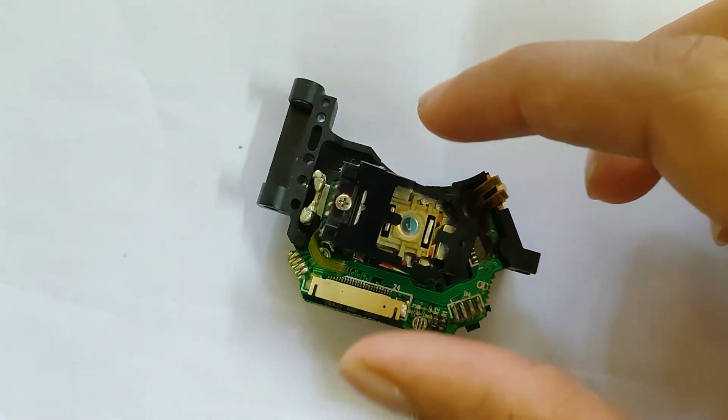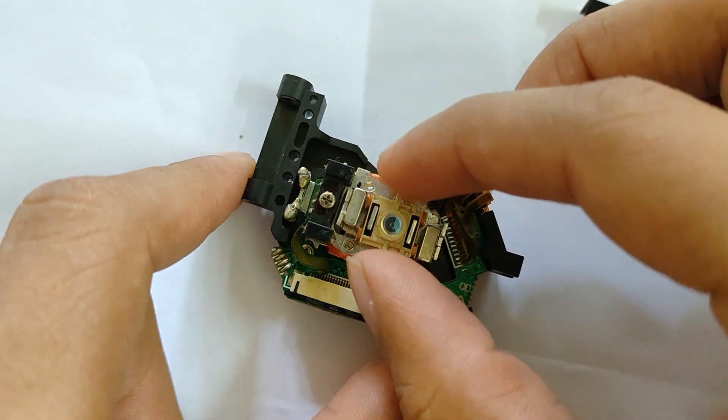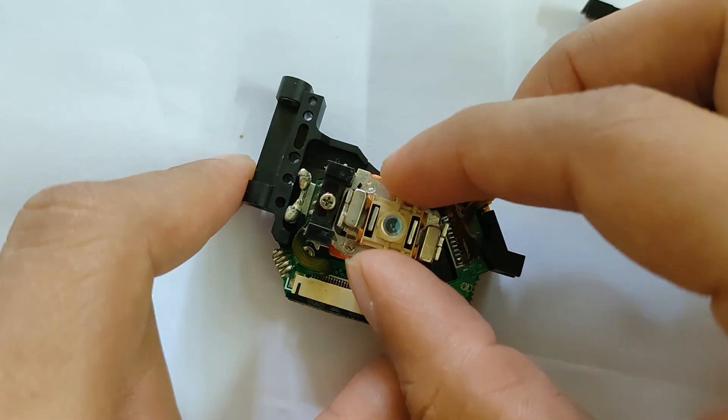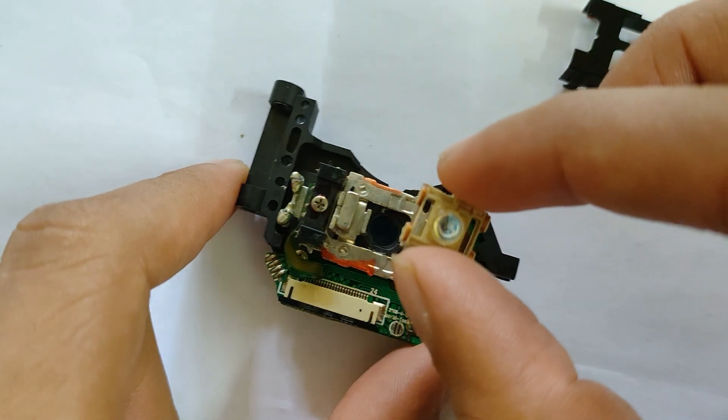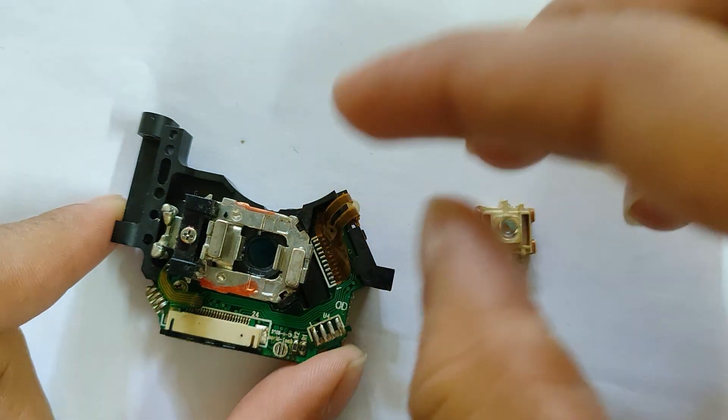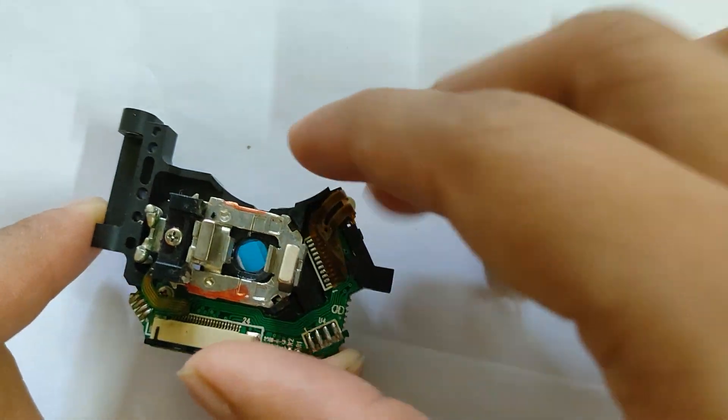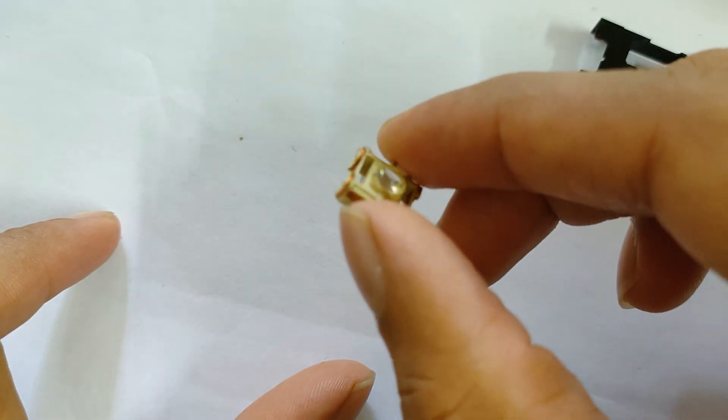You will get here two strong magnets. You can use them in other projects. Now this is the lens we will use.